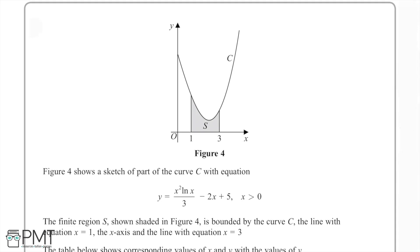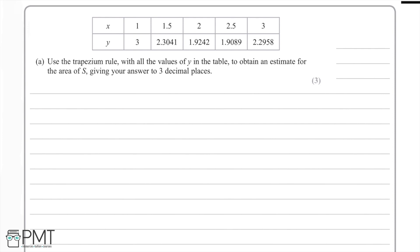In this question we have an equation: y is equal to x squared ln x divided by 3, minus 2x plus 5. This is curve C and part of it is shown in figure 4. We can see the parabola-like shape, and there is a finite region S which is shaded, bounded by the lines x equals 1 and x equals 3. In part A we're asked to use the trapezium rule with all of the values given in the table to obtain an estimate for the area of S.